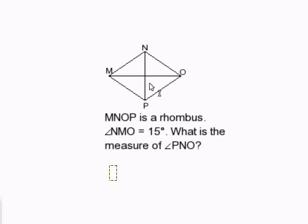Now in this problem, we are given that angle NMO is 15 degrees. Since we know this is 15 degrees, we know this is 90.